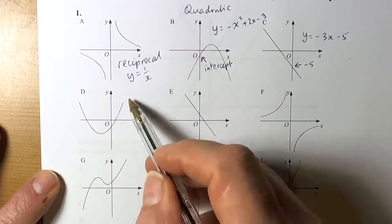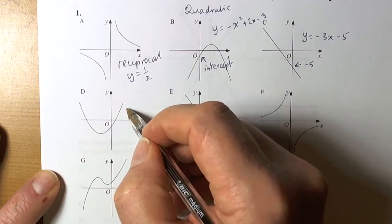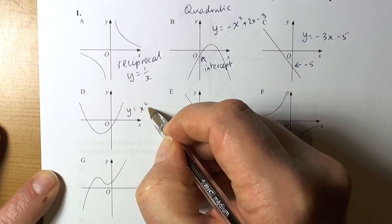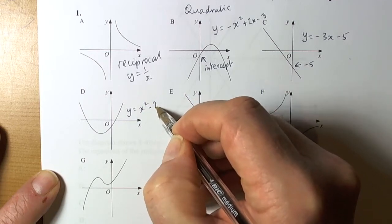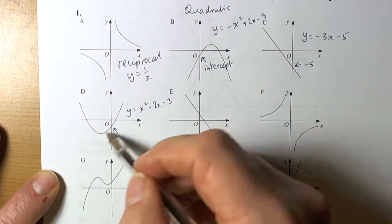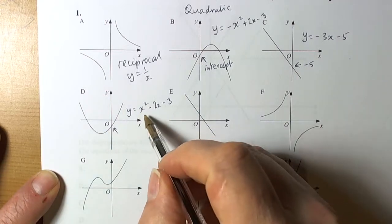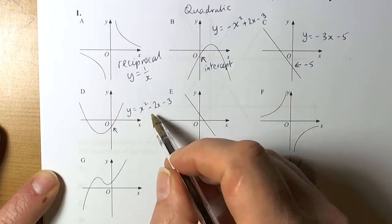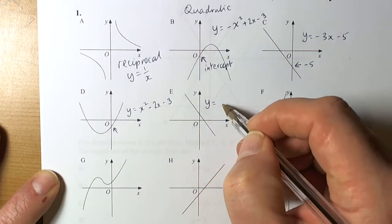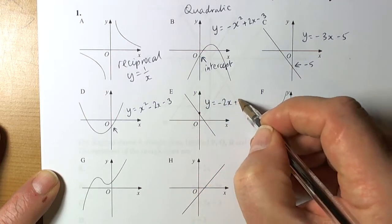This one is a U shape. Again it's not got the line of symmetry through the y-axis, so it's something like y equals x squared take away 2x. The intercept is negative — so say negative 3. We're showing we understand it involves the quadratic function x squared.